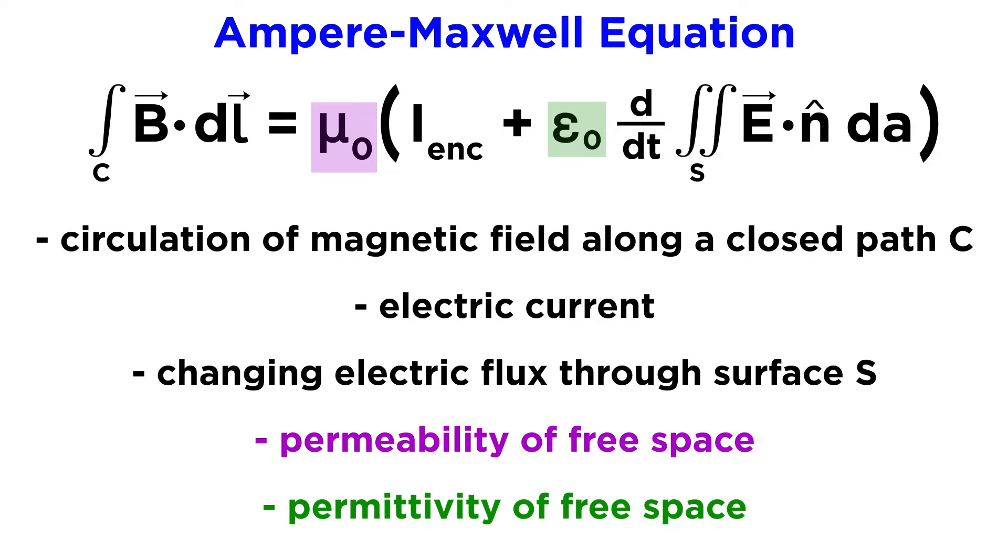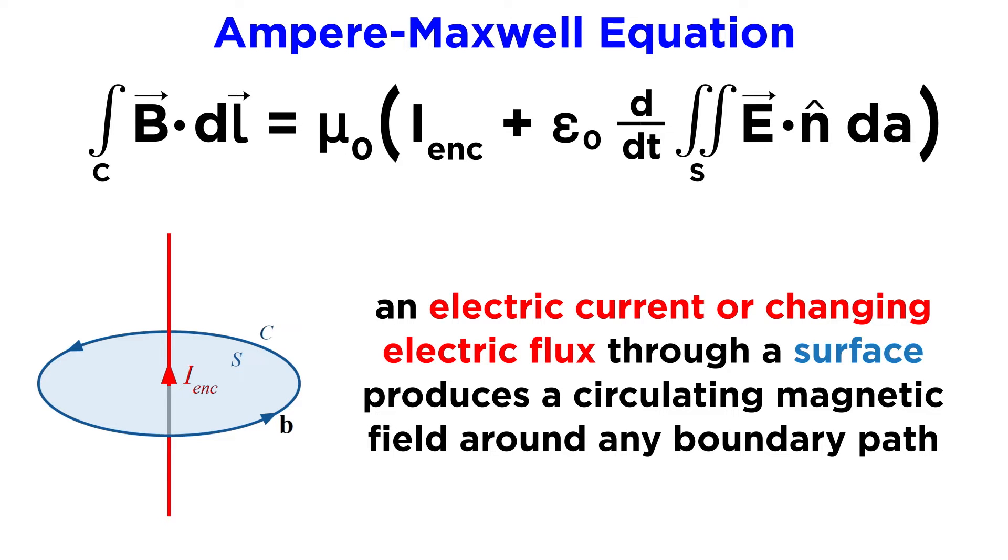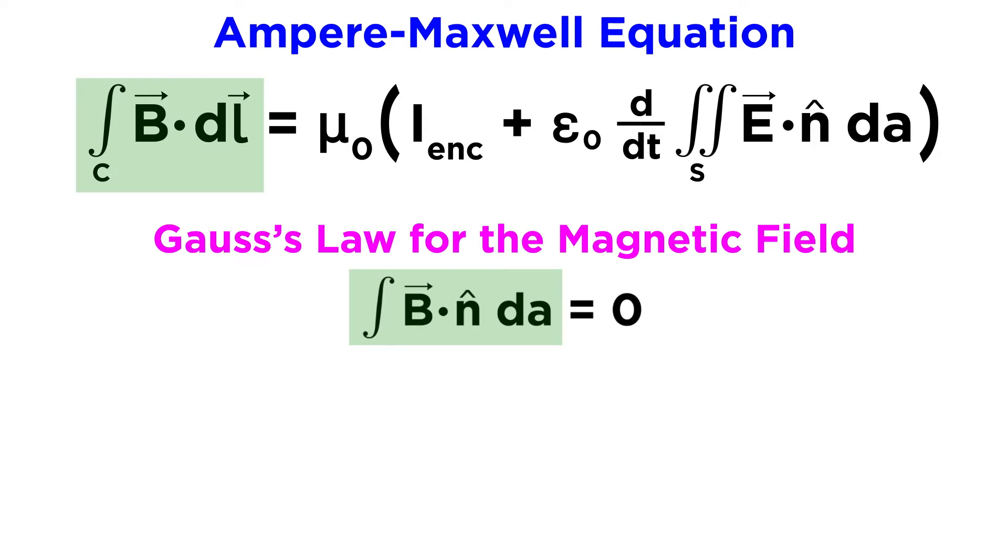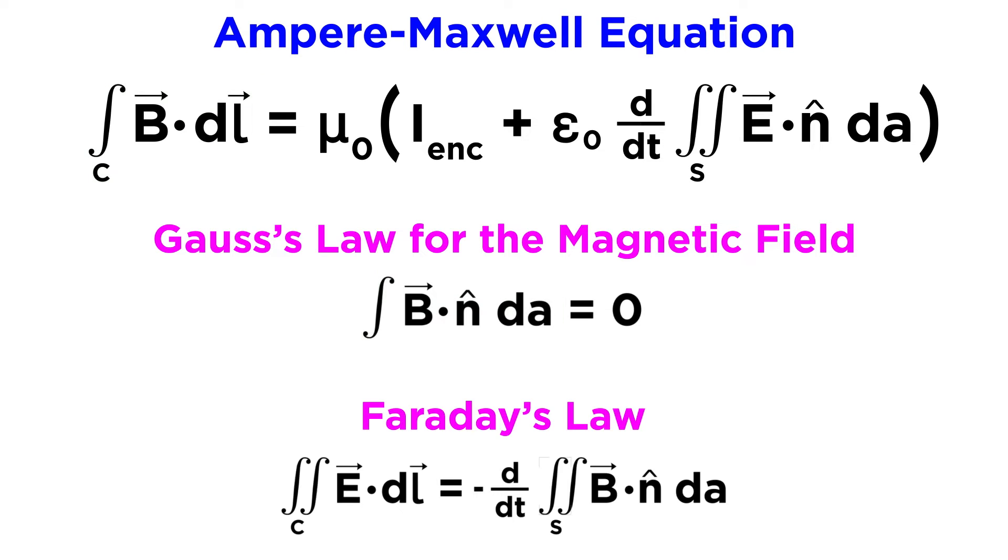Permeability of free space deals specifically with magnetic fields. The main idea of this equation is that an electric current, or a changing electric flux through a surface, produces a circulating magnetic field around any path that bounds that surface. This idea is rather similar to the other three equations. The way the magnetic field term is surrounded by an integral and a dot product echoes the structure of Gauss's law. The law itself is almost a mirror of Faraday's law. Instead of a changing magnetic field leading to a circulating electric field, we see a changing electric field leading to a circulating magnetic field.